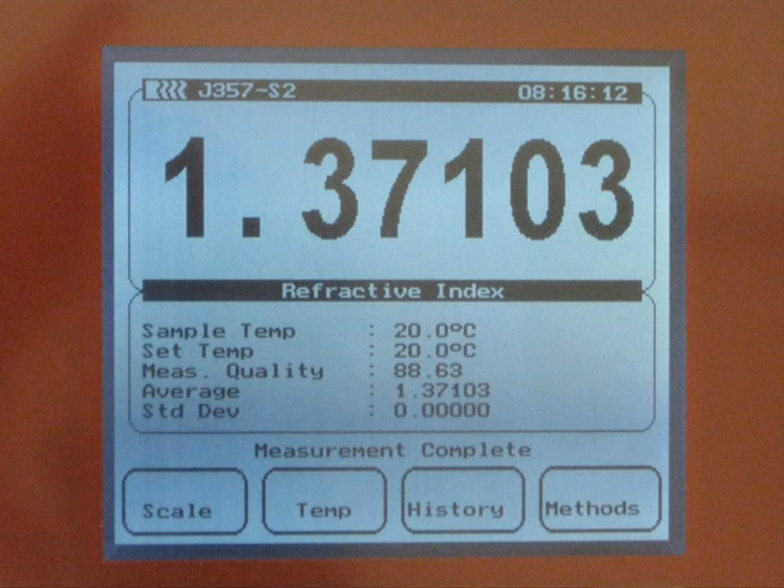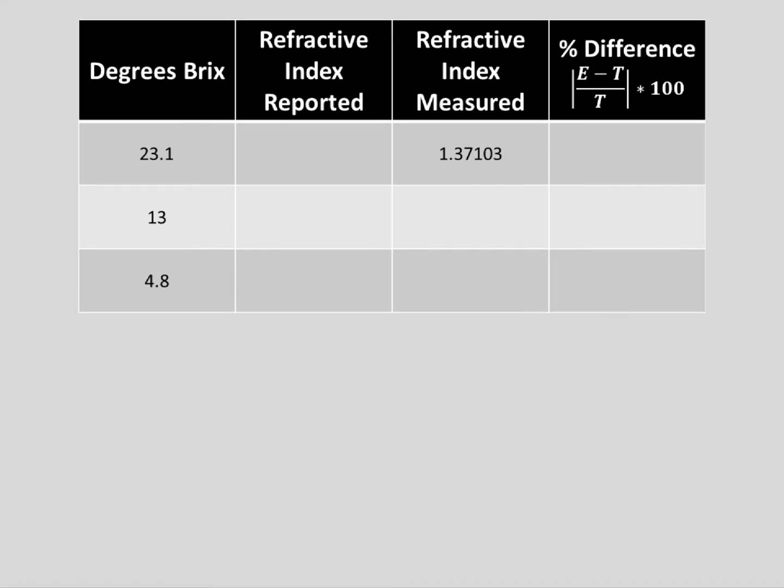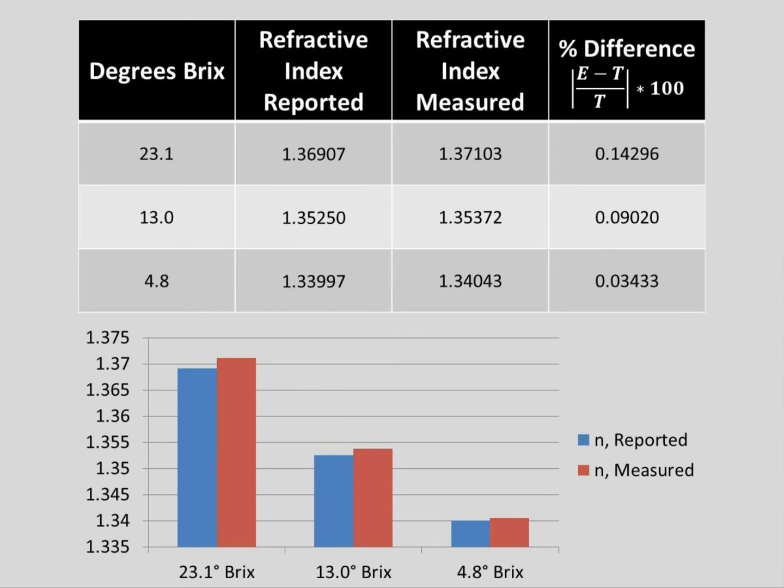Here we see the readout from the refractometer on one of our sugar samples. We can see that it has an index of refraction of 1.37103 after three measurements. We repeated the measurements on the two remaining samples and found values to be 1.35372 and 1.34043. The table values for samples with these BRICS values are 1.33997 for 4.8 degrees BRICS, 1.35250 for 13 degrees BRICS, and 1.36907 for 23.1 degrees BRICS.